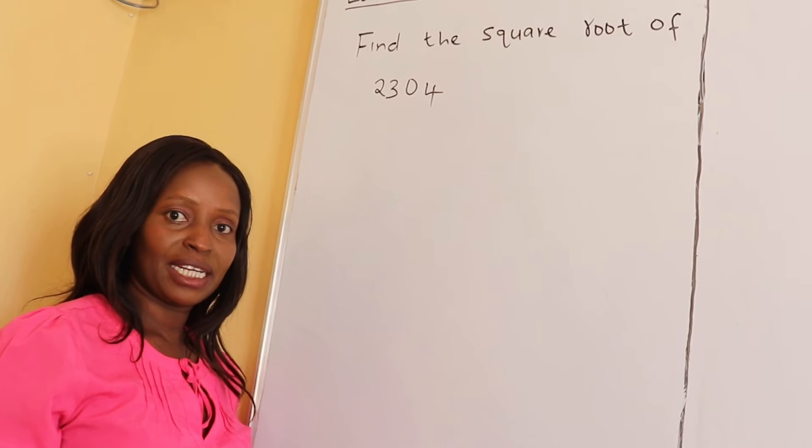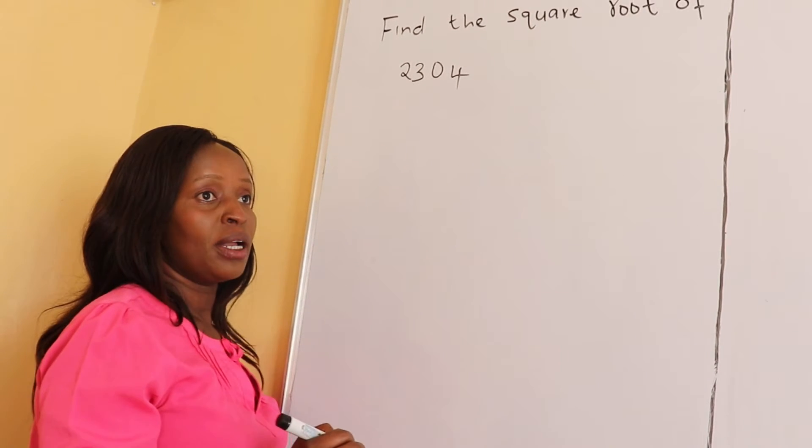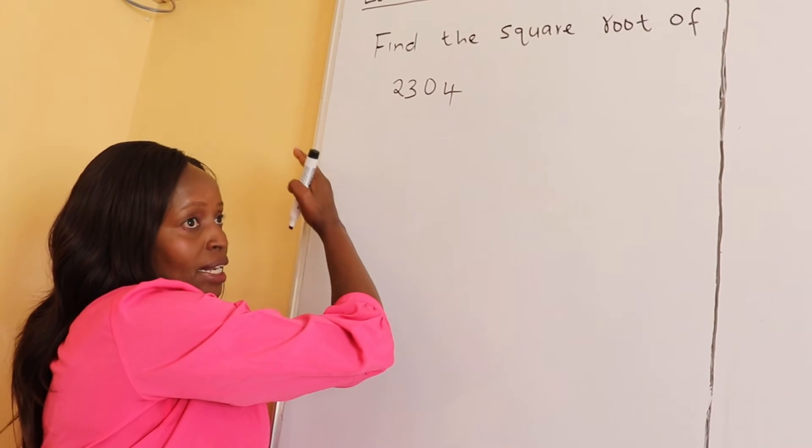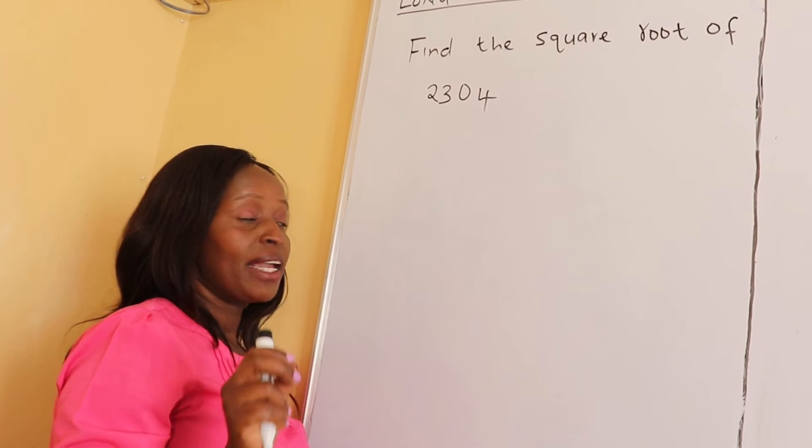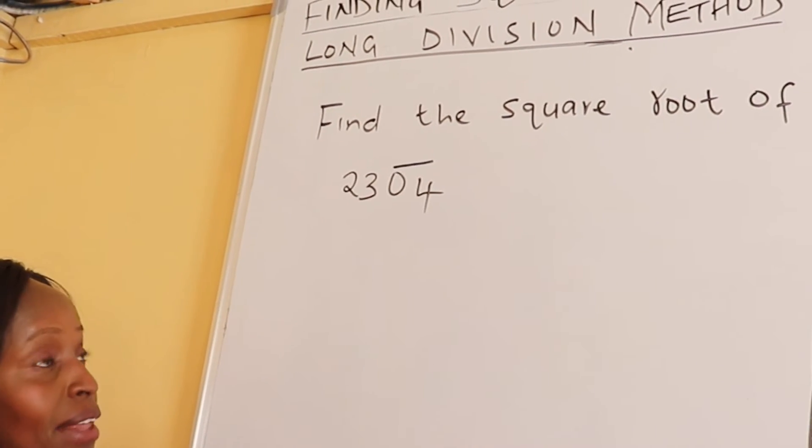Let's start. The first step: you need to pair the digits starting from the right hand side towards the left. Pairing means you put them in groups of two. The first two digits we pair them like that, and the last two digits we pair them like that.